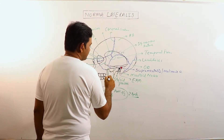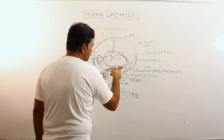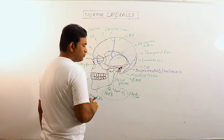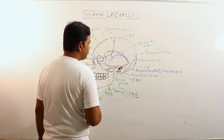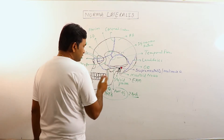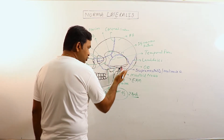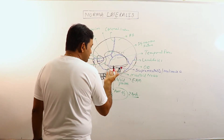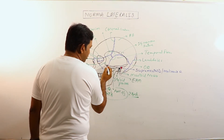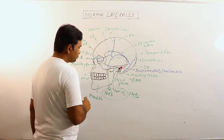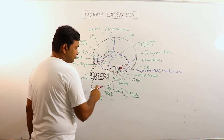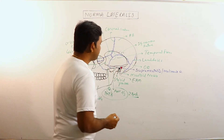The boundaries of the infratemporal fossa are as follows: the roof is formed medially by the infratemporal surface of the greater wing of the sphenoid bone, and partly by the temporal bone. The roof is laterally incomplete. The floor is open. The posterior wall is open. The anterior wall is formed by the medial part of the zygomatic bone and the maxillary bone. The lateral wall is formed by the mandible. So this is the infratemporal fossa, and this is the Norma Lateralis.